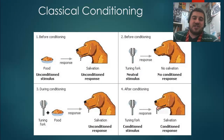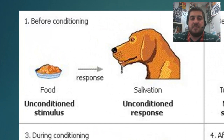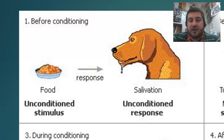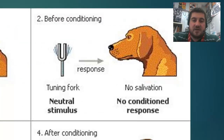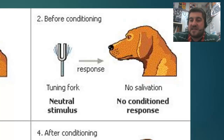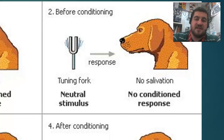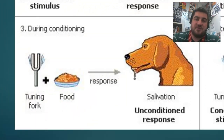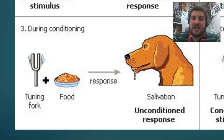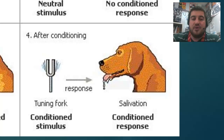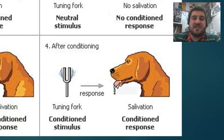Here is classical conditioning in action with Pavlov's experiment. The unconditioned stimulus is the food, and the unconditioned response is salivation — food causes salivation, and that doesn't have to be learned. Before conditioning, introducing a bell or tuning fork causes nothing; the dog won't do anything. But during conditioning, if we pair the tuning fork and the food together at the same time, that causes salivation. Pretty soon, we can remove the unconditioned stimulus — the food — and the tuning fork will cause salivation on its own.